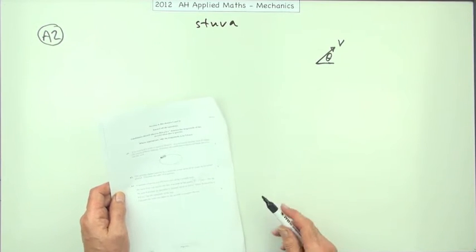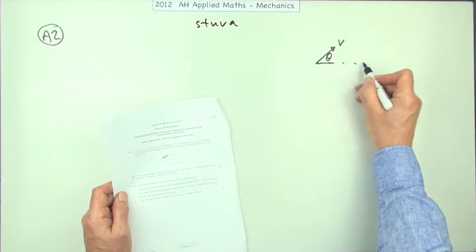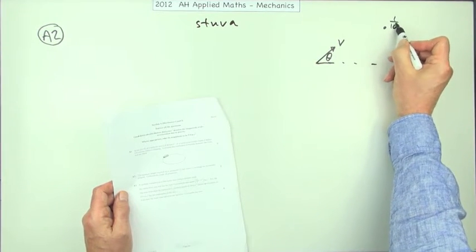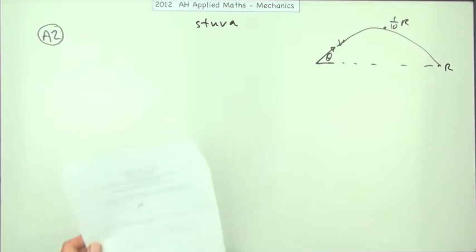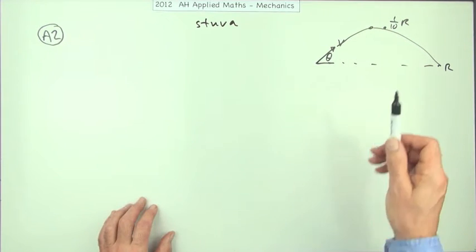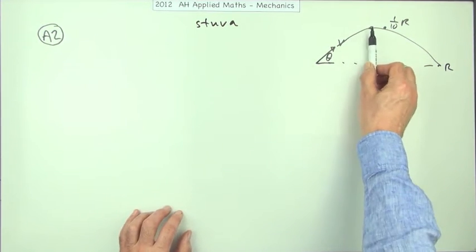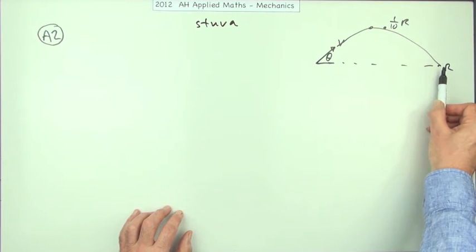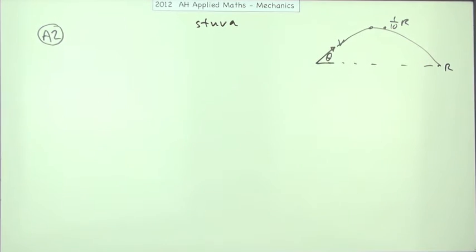The greatest height reached by a projectile is one-tenth of its range on horizontal ground — so the highest it gets to is one-tenth of the range it finally reaches. Calculate the angle of projection. The technique here would be to get an equation for the maximum height in terms of v and θ, for the range in terms of v and θ, and then equate them to get θ.